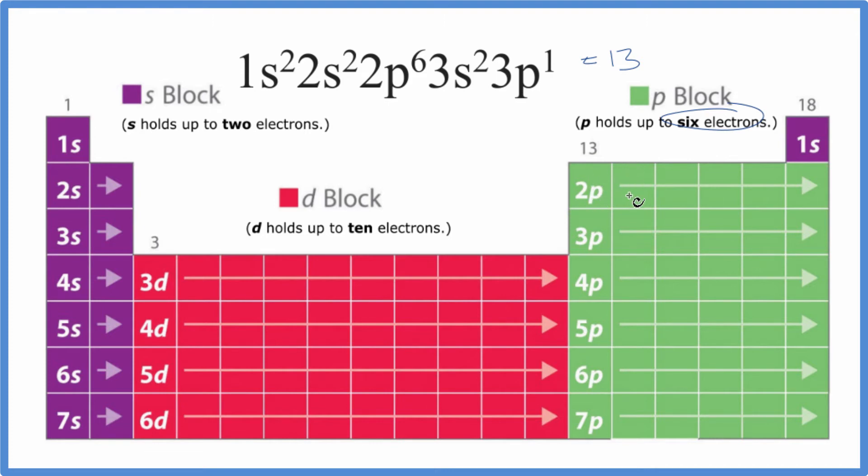And then we have the P orbital, which holds 6. So we have P1, 2, 3, 4, 5, 6. Our configuration, 1s2, 2s2, 2p6, 3s2, 3p1. It ends in 3p1.